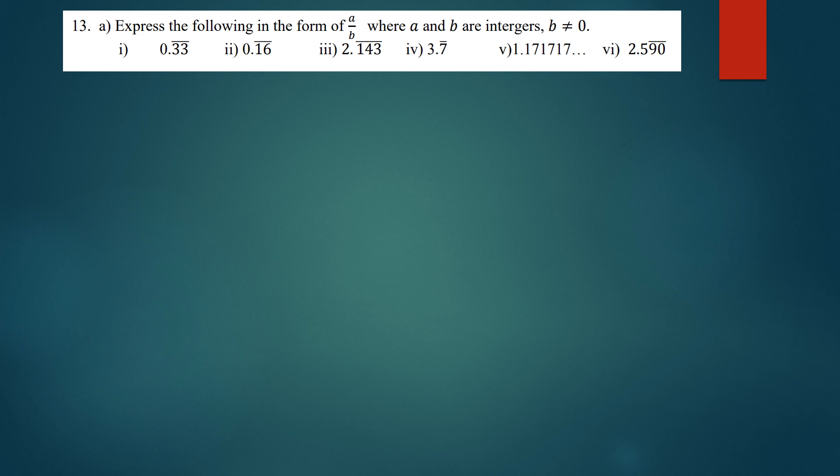In this tutorial we are going to discuss how to express repeating decimal numbers as fractions. The question says: express the following in the form a over b, where a and b are integers.